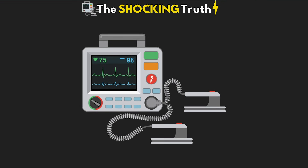When things are going bad for our patient, one of the first things that we grab is the crash cart. On it is one of our most important pieces of equipment in the ICU: the defibrillator. This device has so much life-saving potential, but only when you fully understand how to use it. Contrary to its name, it actually has three main functions or modes: defibrillation, cardioversion, and pacing.